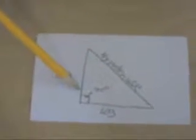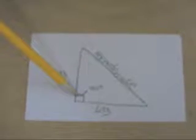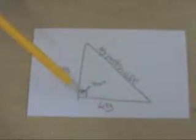Okay, this is a right triangle. A right triangle is a triangle that has one angle that is 90 degrees and it is marked by this square here.